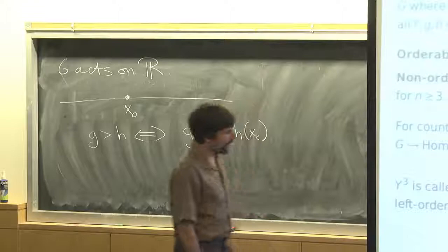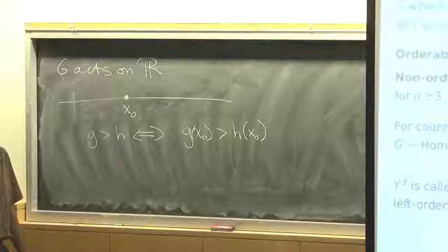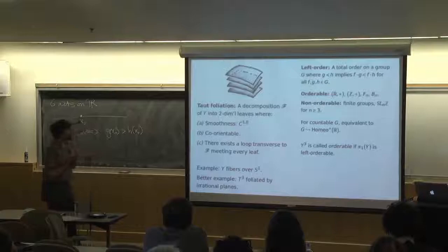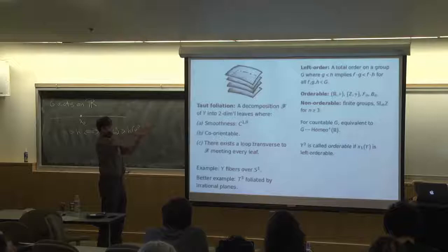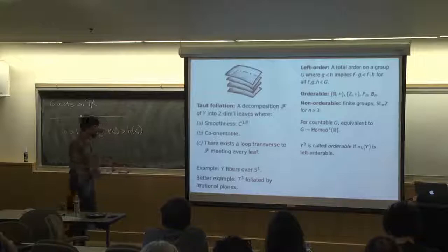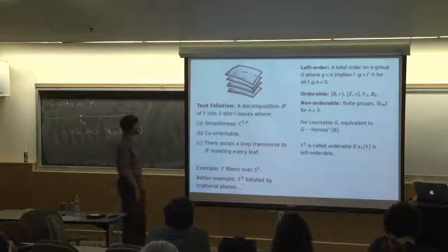If you're more geometrically minded, you might as well just take this as the definition of orderable — it's a group which acts faithfully on R, the simplest one-dimensional manifold you can think of. I'm interested in when three-manifold groups are orderable. For ease of notation, let me just say that a three-manifold itself is called orderable when its fundamental group is left-orderable.